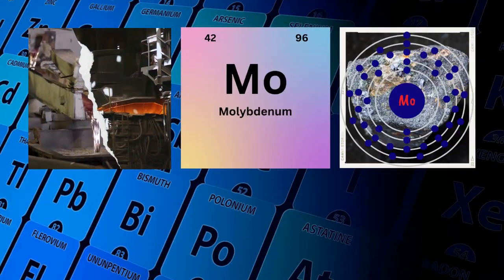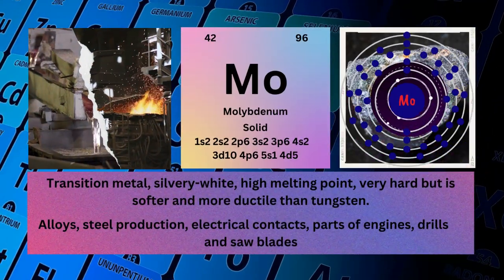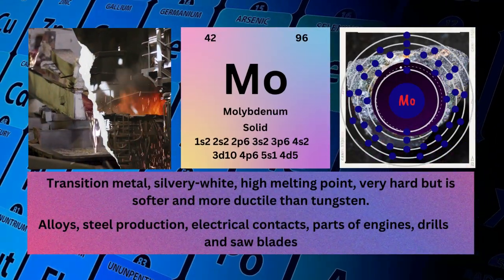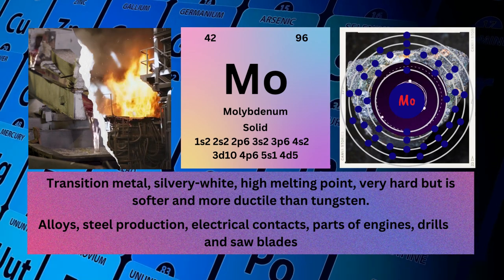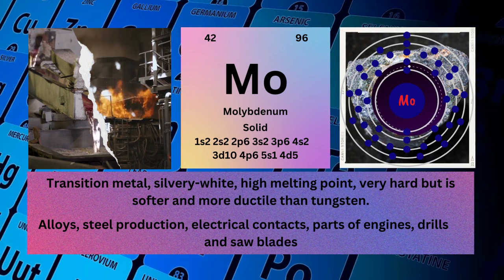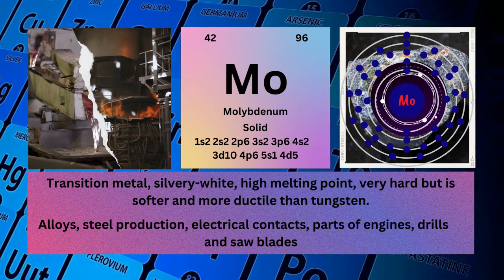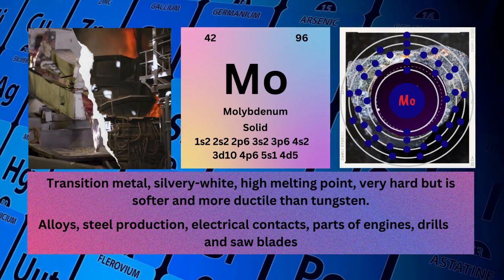Molybdenum. Atomic number 42. Mass number 96. Symbol: Mo. State: solid.